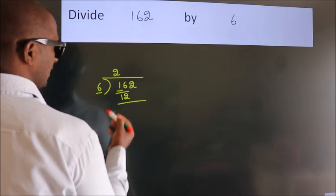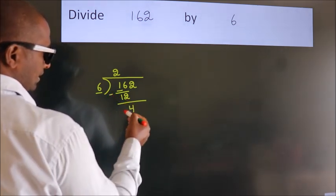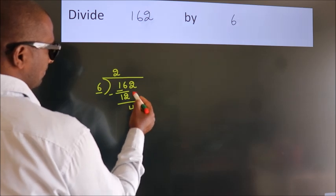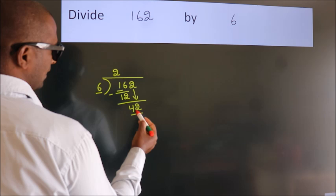Now we should subtract, we get 4. After this, bring down the beside number. So 2 down. So 42.